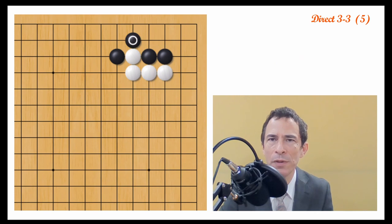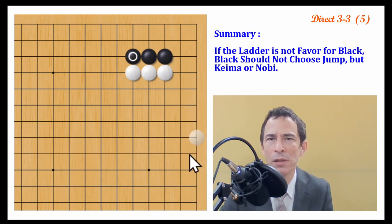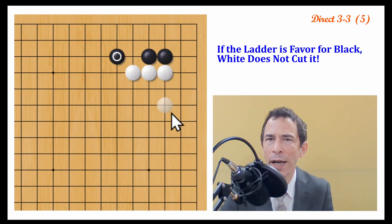Just to go back a few moves. If the ladder favors white, maybe black doesn't want to play this move, and instead should play a move like this. The other option being crawling. That's the subject of a different video. So when black jumps here, we'll assume that the ladder in this variation favors black.